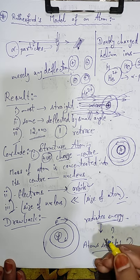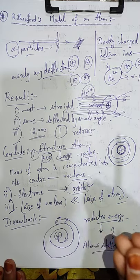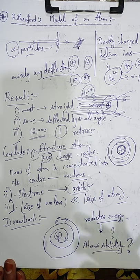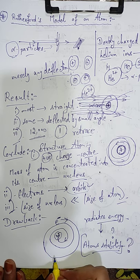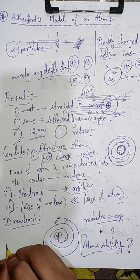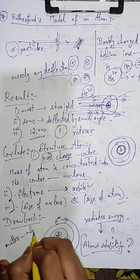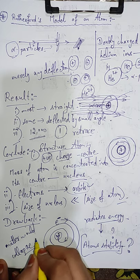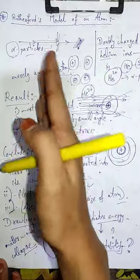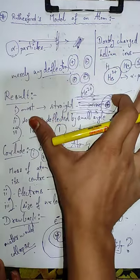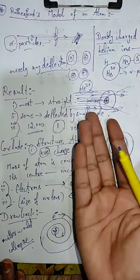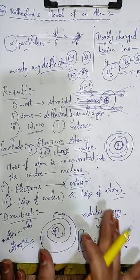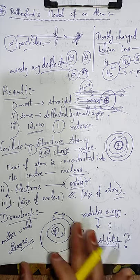Is hisaab se toh phir kya hoga ki yeh same path na trace karke uska orbit ek spiral ban jaaye, aur woh dheere dheere jaake nucleus mein collapse kar jaaye. Ab agar yeh saare electrons isi tariqe se revolve karte karte nucleus mein collapse karenge, toh atoms ki stability pe question uthta hai. Jabki atoms toh stable hote hain — atoms se bane huay matter jo hum aas paas dekhte hain, woh sab stable hain. Agar iska explanation nahi aaya toh hum atoms ki stability pe question uthayenge — matter would start collapsing. So this is all about Rutherford's model of atom.